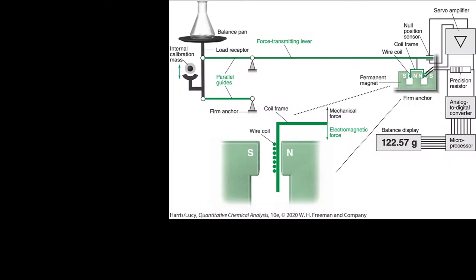The operation of an analytical balance is quite complicated, and so this diagram gives us a simple idea. We've got our balance pan that we place our object on, and there's a series of beams inside that will transmit the force. So for instance, the weight pushes down here and it's transmitted to this beam here, which causes this lever to increase in height.